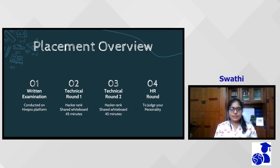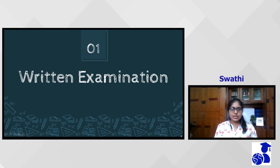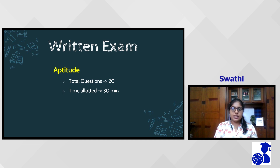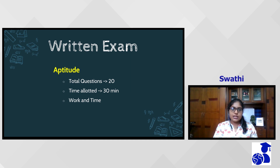The written examination was conducted on an online platform — HackerEarth. It had three sections, each with 20 questions, and a sectional cutoff of 30 minutes. The sections were general aptitude, technical aptitude, and C programming. In the general aptitude section, there were questions on basic work-time and data interpretation. The data interpretation questions were quite lengthy, so time management is important.